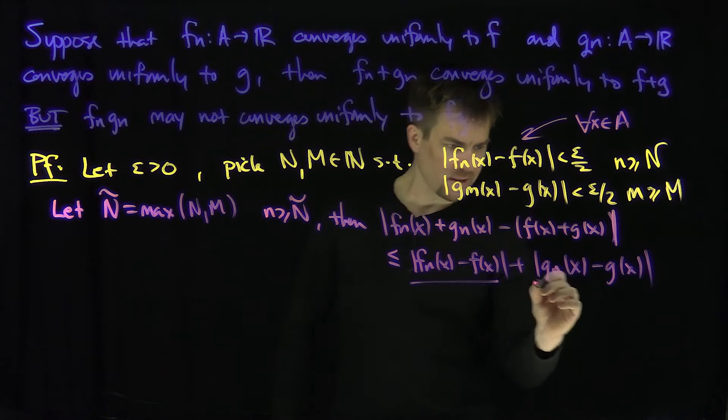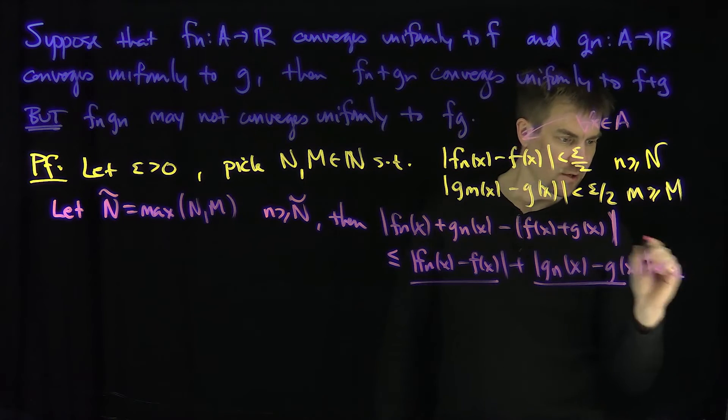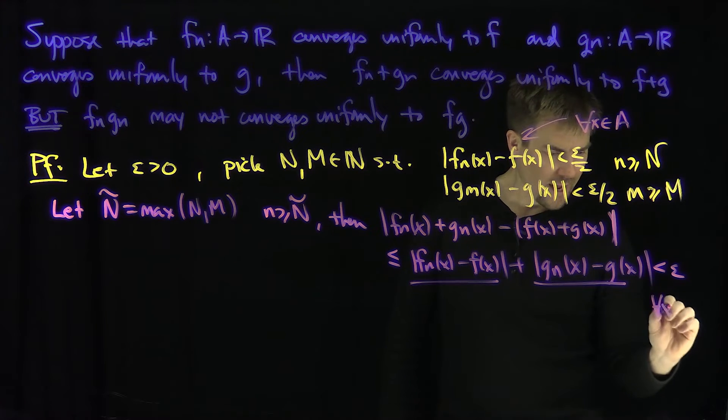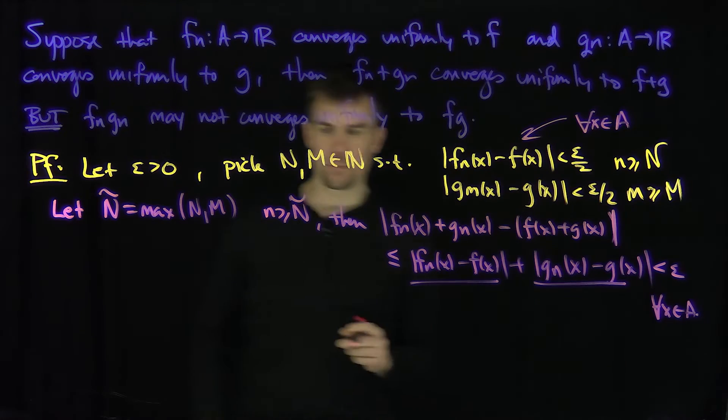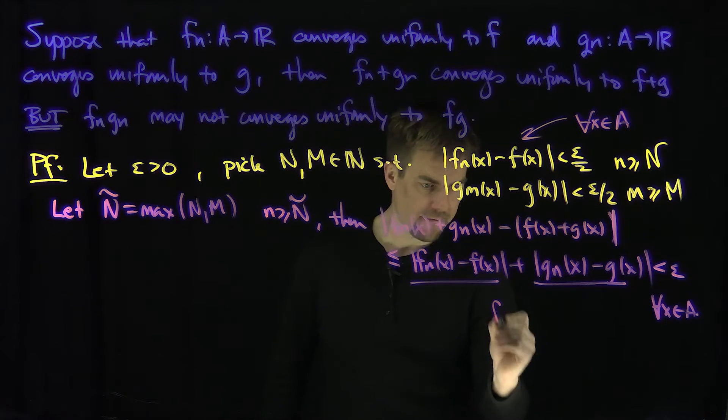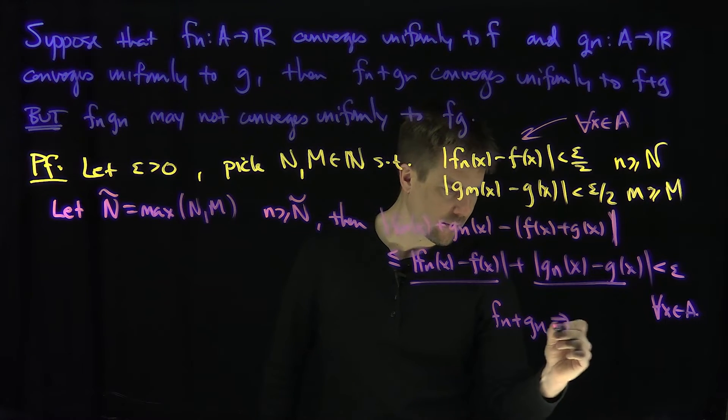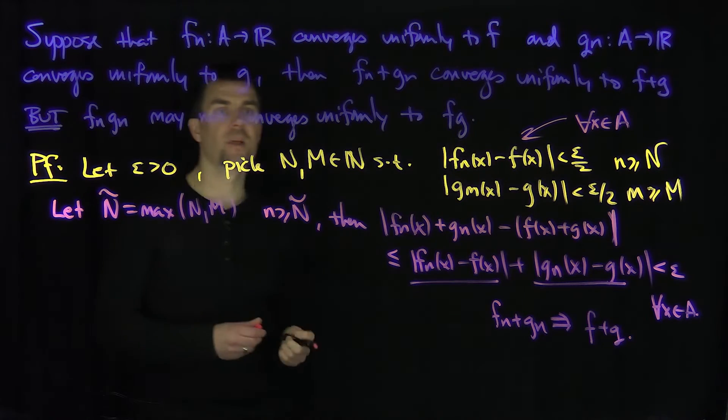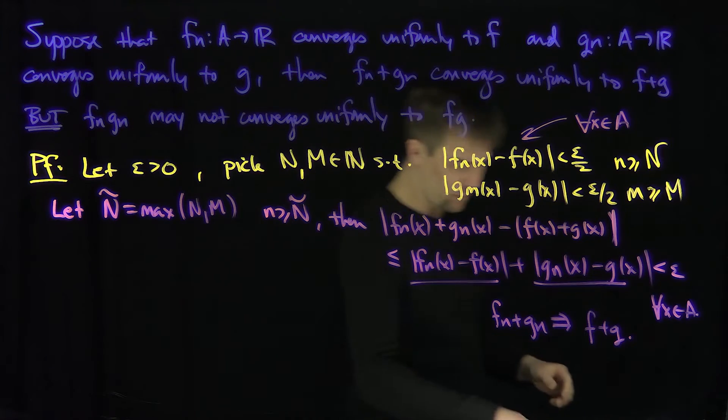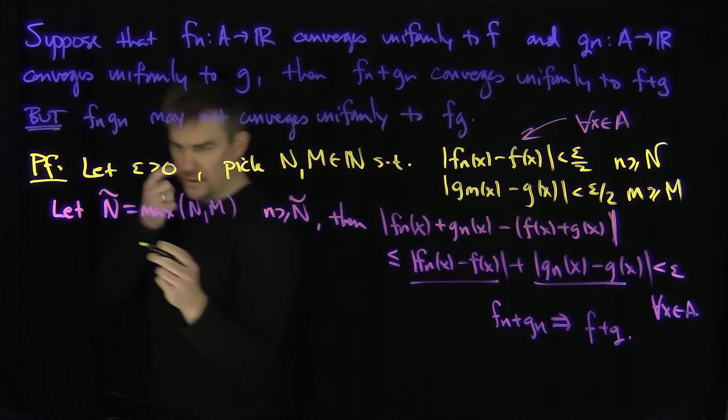That's less than epsilon over 2, that's less than epsilon over 2, so this is less than epsilon for all x in A, and that proves the uniform convergence. In other words, Fn plus Gn converges uniformly to F plus G. Now the same thing is not true for the product. Here's a counterexample.